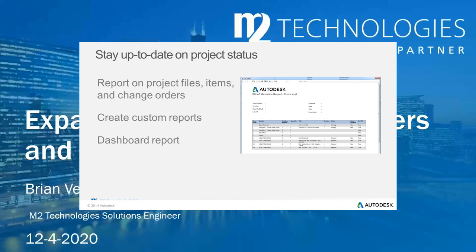Other options with the desktop application include running standard or custom reports, which is super helpful so you can see real-time information on files, projects, sub-projects, items, and change orders open against a design. The dashboard report can also be used to view the current lifecycle state and designer activity, giving a project manager visibility on where a project currently stands and the design files generated against it — all without having to call people to get a status update.